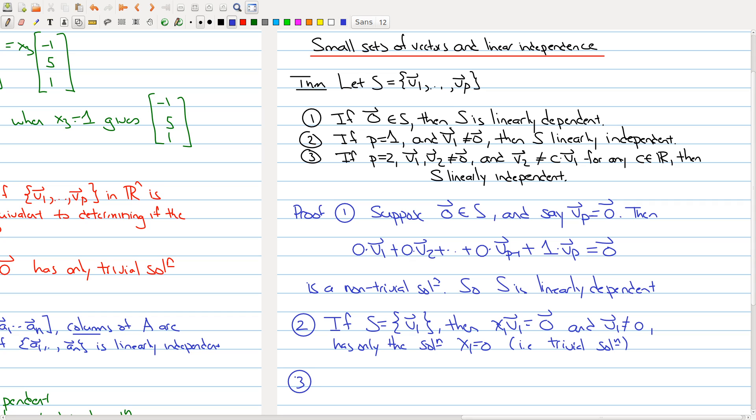The third fact here tells me what happens if I have exactly two vectors. I have two vectors and they're both non-zero because we want to avoid case one. We have two non-zero vectors, and this condition is saying that the first vector is not a scalar multiple of the first vector. Then what you have is that these two vectors are linearly independent.